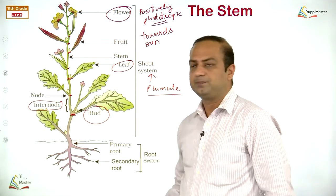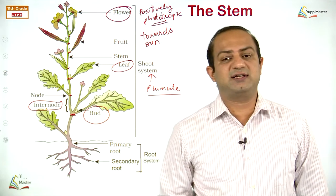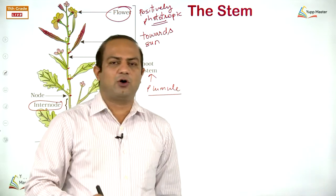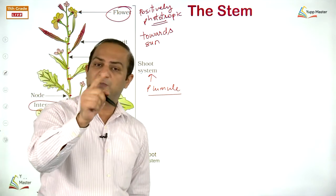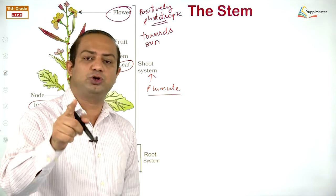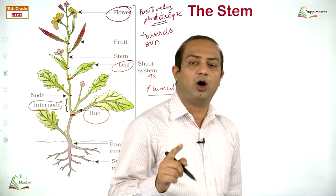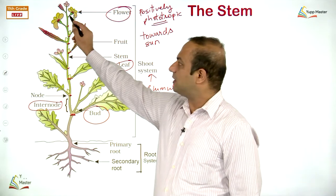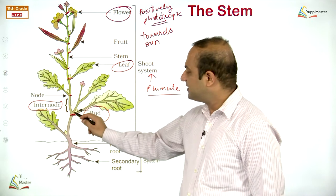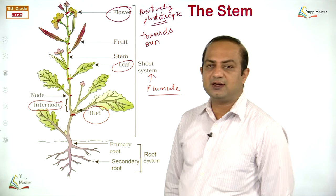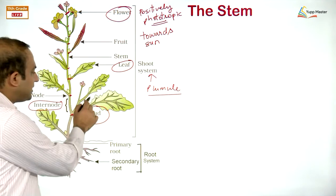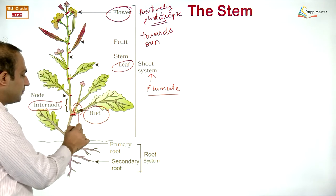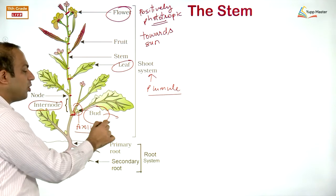Buds are present on the stem. In roots, buds are present on certain structures like sweet potato, Dahlia, and asparagus — but buds are not usual on structures other than the stem. The bud at the tip is converted into a flower. The bud present in the angle between the stem and the leaf is called the axillary bud.